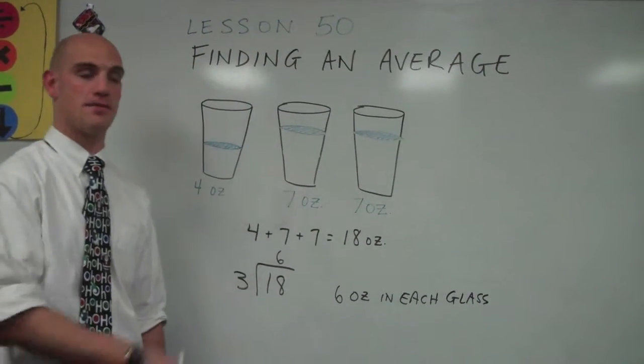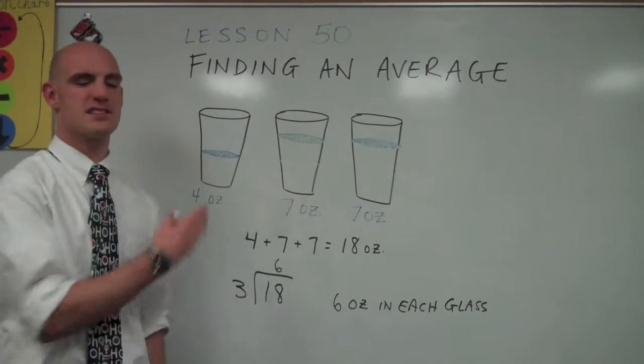That's our first example of how to find average by dividing into equal groups, in this case, three.